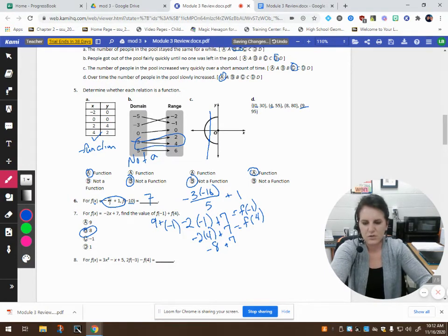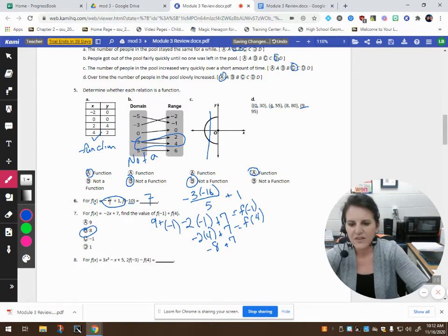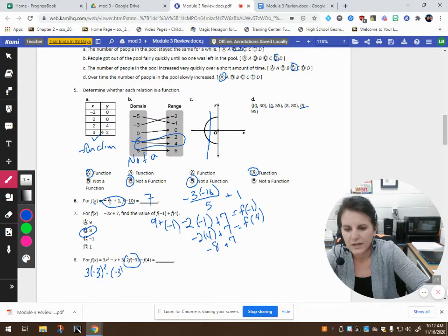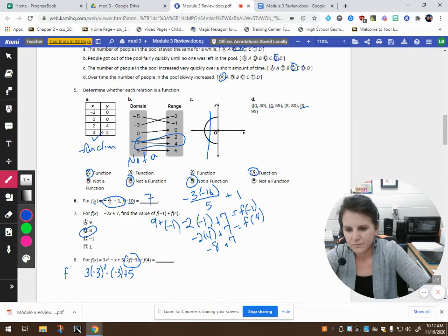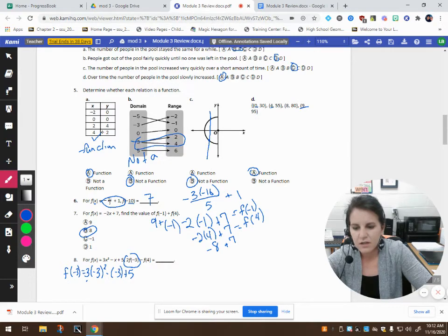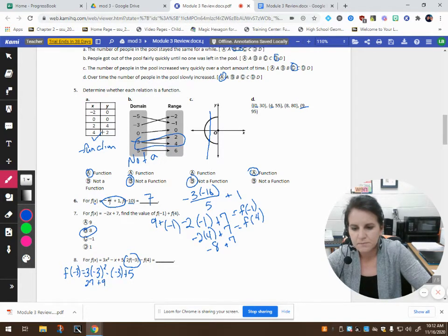For f(x) = 3x² - x + 5, find 2 times f(-3) minus f(4). So, first I need to find f(-3). So, 3 times (-3)² minus a -3 plus 5. That is f(-3). Well, -3 squared is a positive 9 because a negative times a negative makes it a positive 9. 9 times 3 is 27. 27 minus a negative becomes a plus 3. And then plus 5. So, 27 plus 3 is 30. This is 35. If I double 35, this is 2 times 35, which is 70, minus f(4).